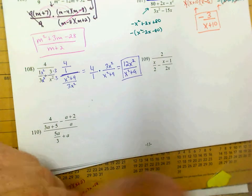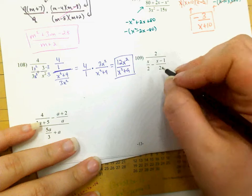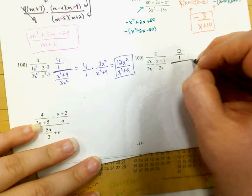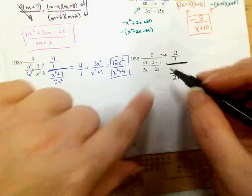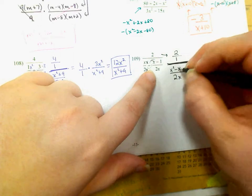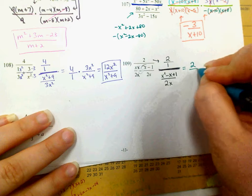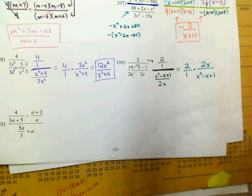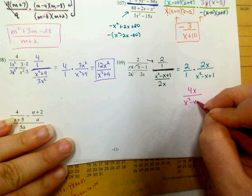Number 109: the denominators are 2 and 2x, which are factors of each other, so I just need an x to make the common denominator 2x. So I have 2 over 1 divided by that fraction. In the denominator I've got 2x, and in the numerator I have x squared minus x minus 1, distributing the minus sign. That is equivalent to 2 over 1 times 2x over x squared minus x plus 1. Since there are no factors of 1 that add up to negative 1, the denominator won't factor, giving a final answer of 4x over x squared minus x plus 1.